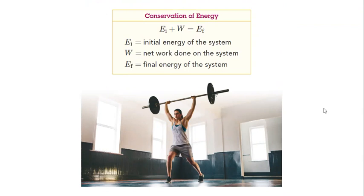What about W? Yes, you all know what's the meaning of W by now. W stands for network done on the system. So the initial energy of the system plus the work done on the system is going to equal the final energy of the system.